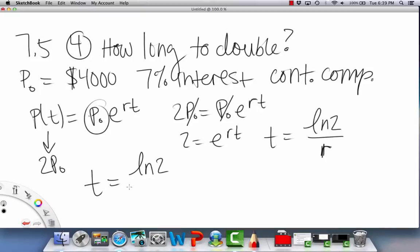So our r, because it says 7%, as a decimal, that's 0.07, and this equals 9.9 years, approximately. There's our answer.